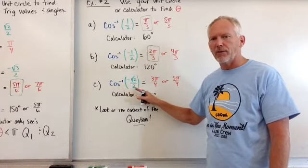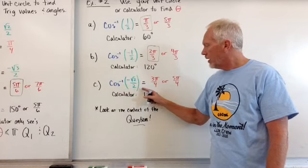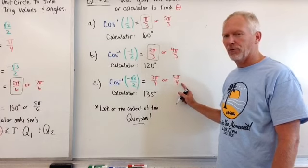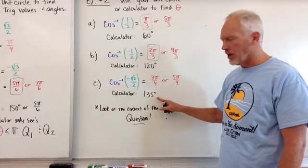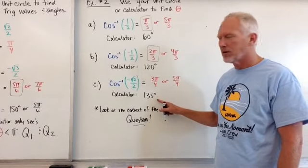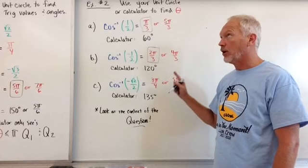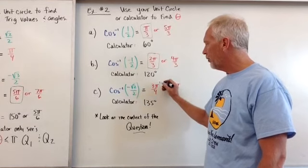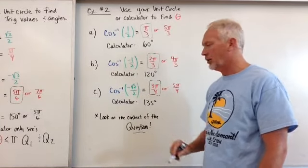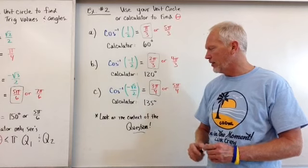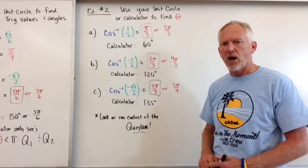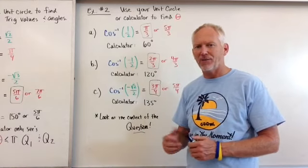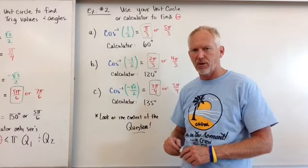Cosine inverse of negative root 2 over 2. On the unit circle, it tells me it's at 3 pi over 4, or 5 pi over 4. My calculator says it's at 135 degrees. So I need to look. Think quadrant 1 or quadrant 2. Well, 3 pi over 4 is in quadrant 2. So that would be the better answer. We want to look at the context of the question. What are they asking us?